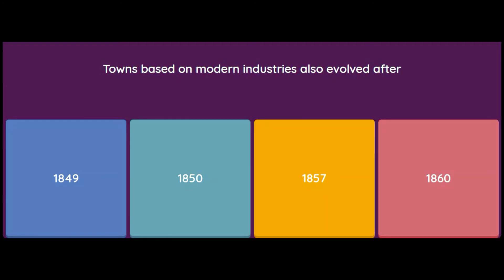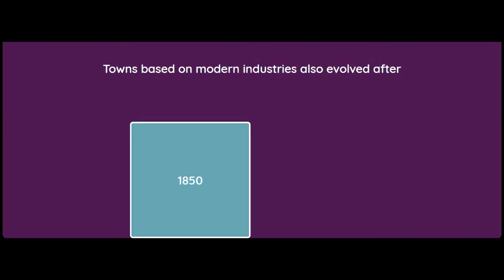Towns based on modern industries evolved after which year — 1849, 1850, 1857, or 1860? The answer is 1850.